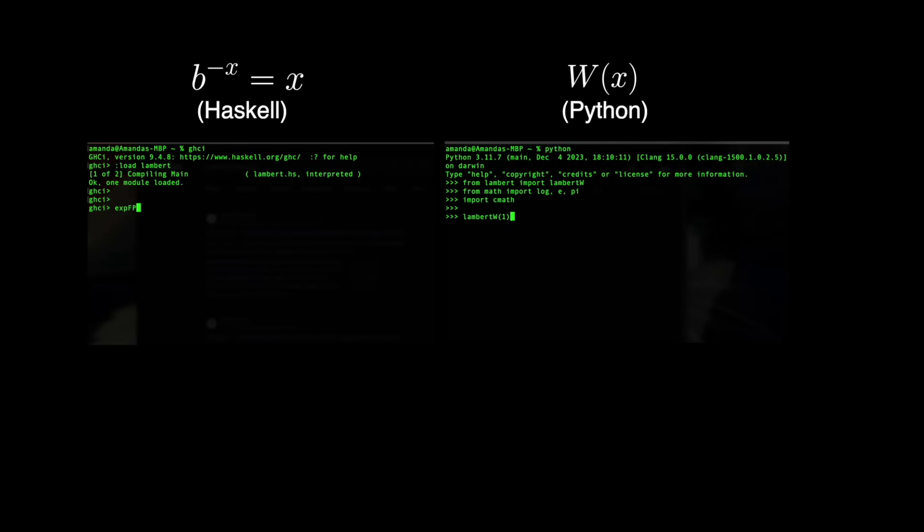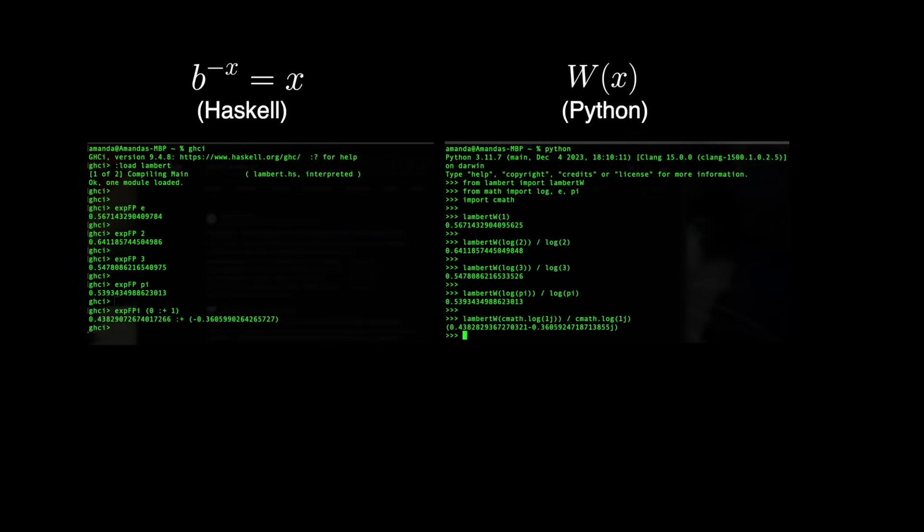With e, the comparison between the two is trivial. The fixed point of e to the minus x is W of 1, as the log terms cancel out. For the fixed point when the base is 2, we see that it is the same as W of log 2 divided by log 2. Same goes for 3, or pi, or even for i.